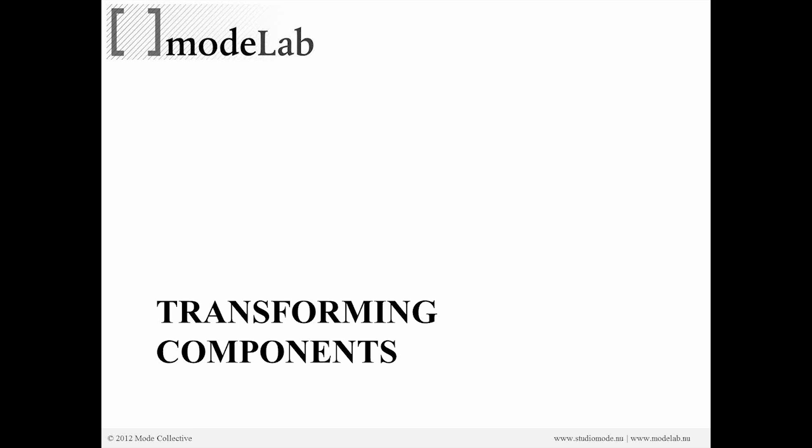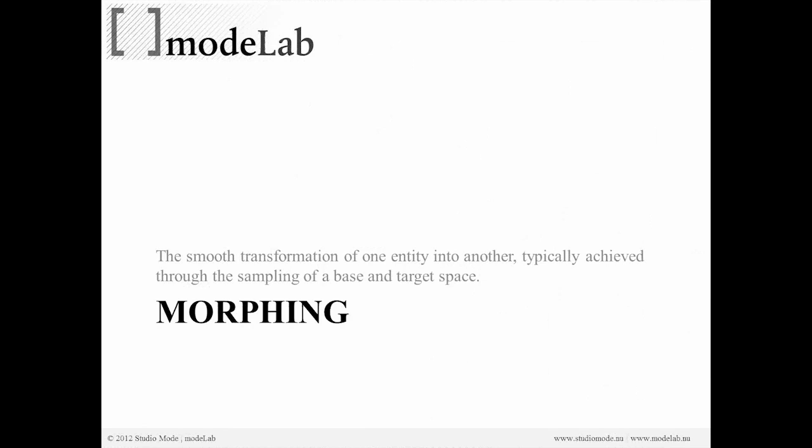Morphing is typically referred to as a kind of transformation, but it's a very specific type. What we want to do in this example is work with components and leverage morphing techniques to transform those components — where the unit deforms by way of the surface or substrate to which it's morphed. Really, the core of morphing is a smooth transformation of one entity into another, achieved through sampling a base space and a target space and coordinating the transformation of the object through those two spaces.